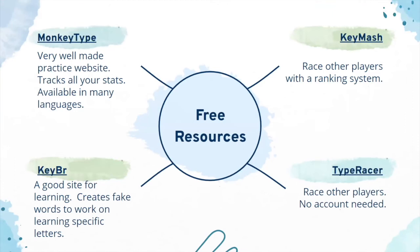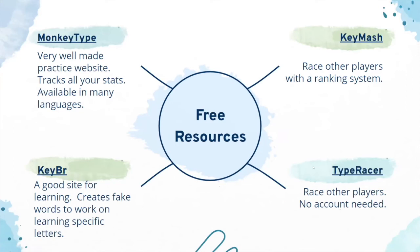For free resources to improve your typing, these four are some well-known platforms: MonkeyType, HeMash, QBR, and TypeRacer. MonkeyType is a well-made practice website that tracks your stats and is usable in different languages. HeMash is a racing platform with a ranking system where you can race other players and see how fast you type. QBR creates fake words to help you work on specific letters and patterns frequent in languages. TypeRacer, the most well-known of all, is a basic site that lets you race other players.